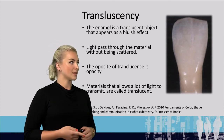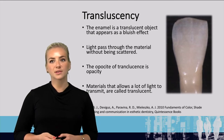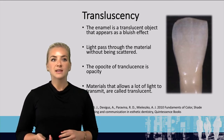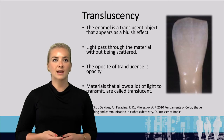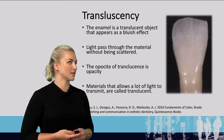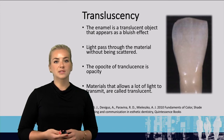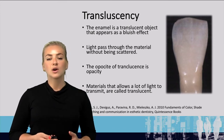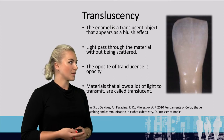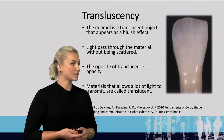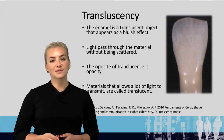The opposite of translucency is opacity. If you look at a material, you could say that it's either opaque or translucent. Examples of materials we would consider translucent are water, glass, or the enamel of a tooth — materials that allow light to transmit through them are also called translucent.